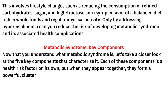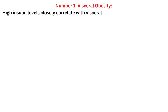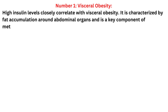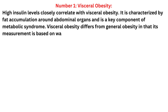Now that you understand what metabolic syndrome is, let's take a closer look at the five key components that characterize it. Each of these components is a health risk factor on its own, but when they appear together, they form a powerful cluster known as metabolic syndrome. Number one: visceral obesity. High insulin levels closely correlate with visceral obesity, characterized by fat accumulation around abdominal organs, and it is a key component of metabolic syndrome.